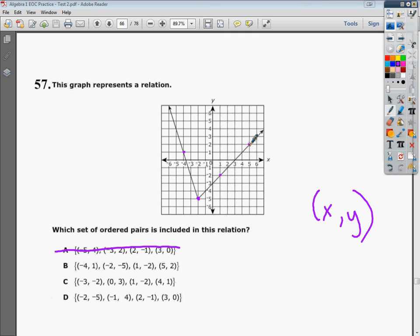So if I go over to 5 and up to 2 and make a dot, all four of those points are on my graph. So I can say that that is the set of ordered pairs that is included in my relation.